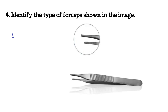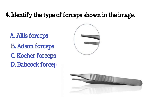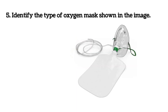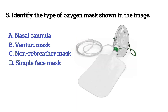Next question: identify the type of forceps shown in the image. Option A: Allis forceps. Option B: Adson forceps. Option C: Kocher forceps. Option D: Babcock forceps. The answer is B, Adson forceps.